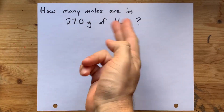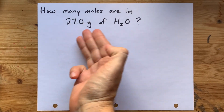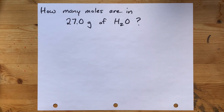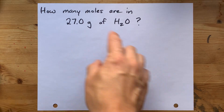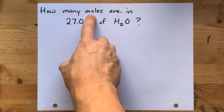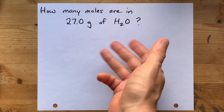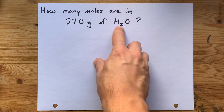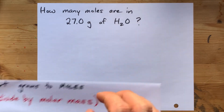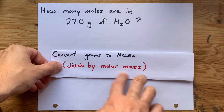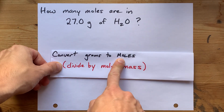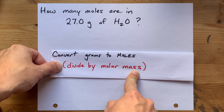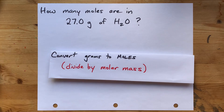How many moles are in 27 grams of H2O? Well, if we assume we're talking about moles of molecules here, like H2O chunks, then it's as easy as dividing by the molar mass of the compound.